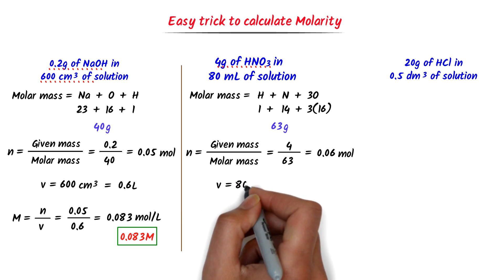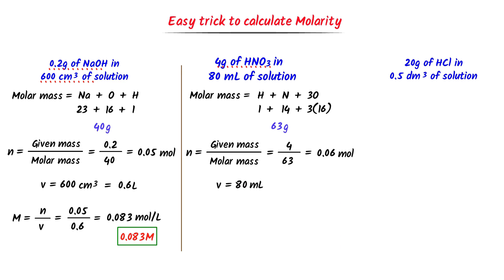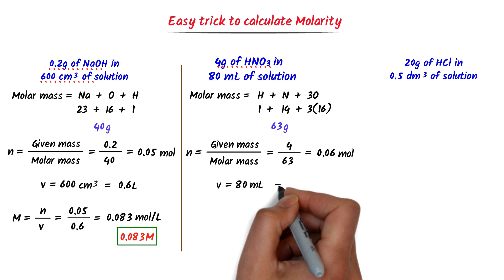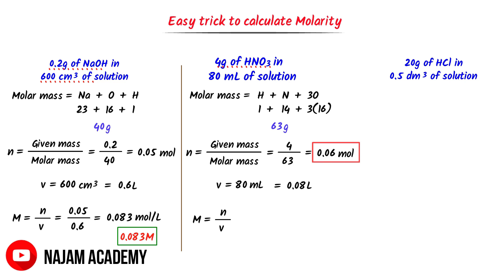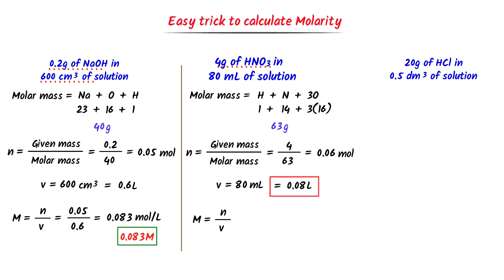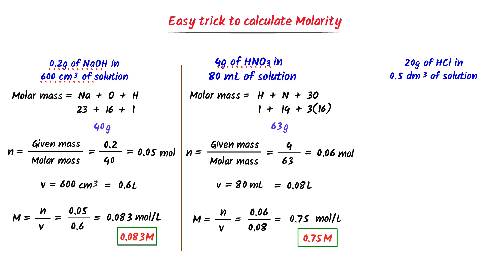Secondly, the volume of a solution is 80 milliliter. I convert it to litre by moving the decimal point three times to the left, and I get 0.08 litre. We already know that molarity M equals N upon V. The value of N is 0.06 mol and the value of V is 0.08 litre. I plug in these two values in this equation. After calculation, I get 0.75 mol per litre, or just 0.75 M. So the molarity of this solution is 0.75 M.